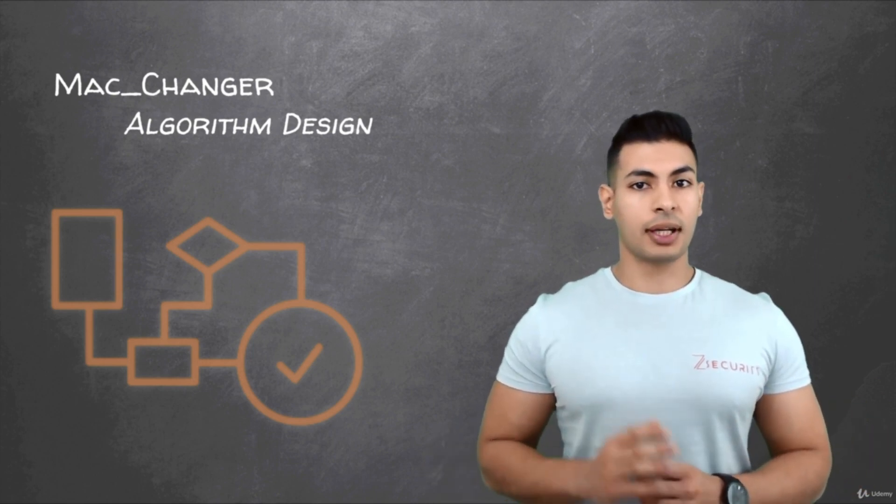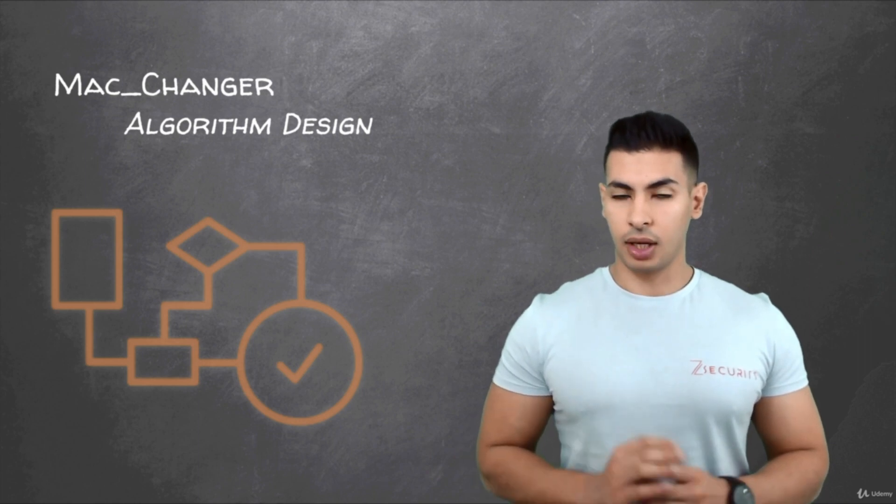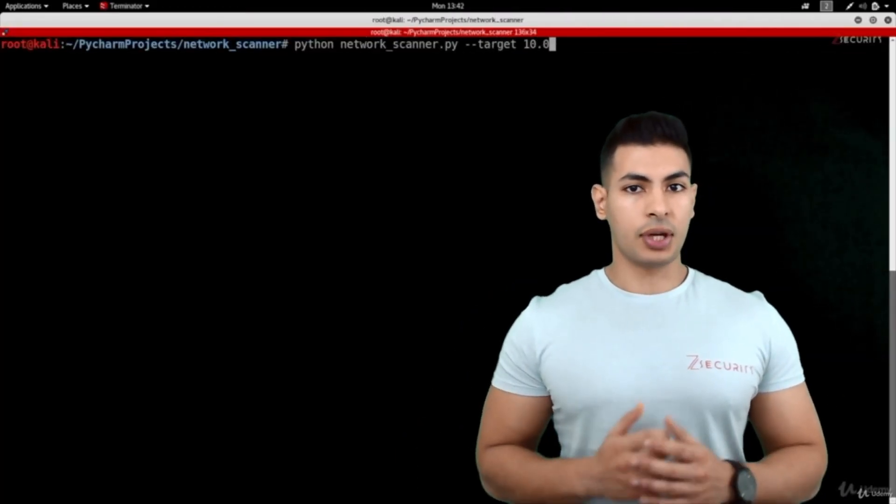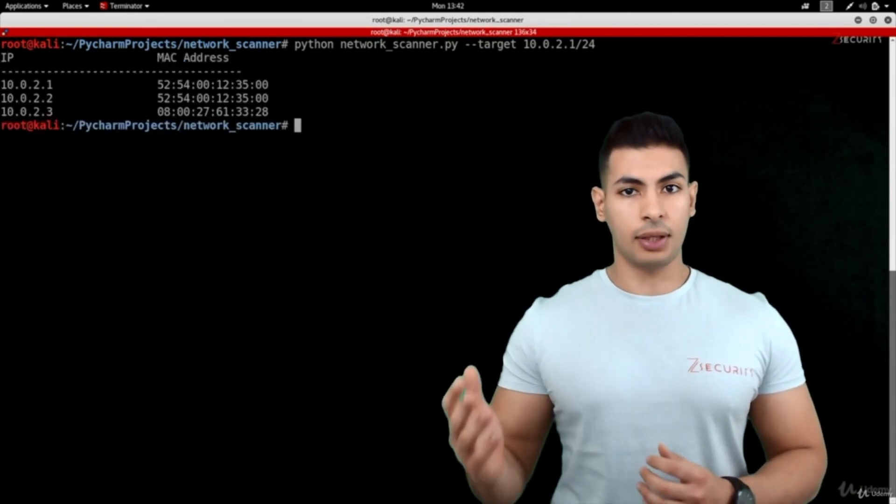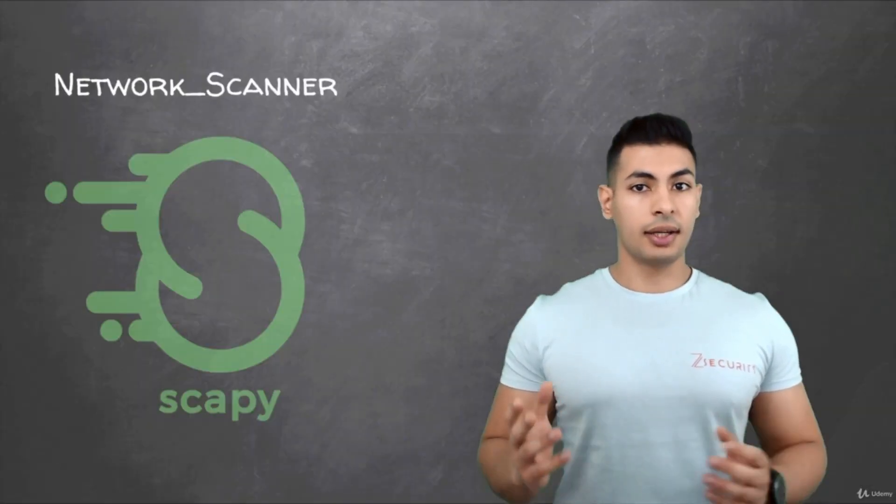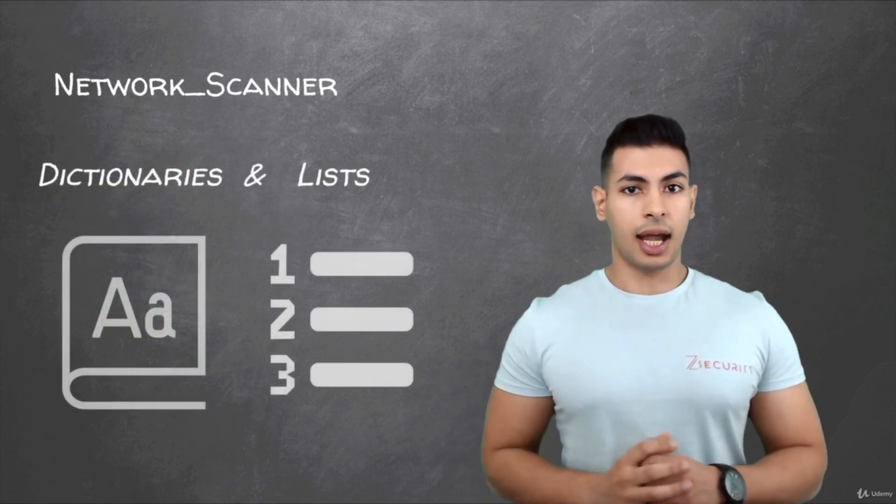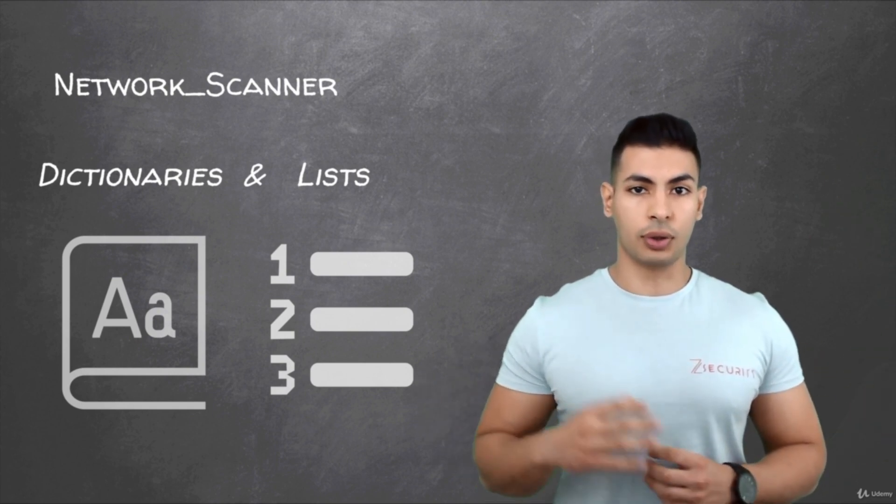Once we have the basics covered, we're going to start writing a little bit more complex programs. So we'll start with a network scanner, which is a program that can discover all clients connected to the same network and display their IP address and MAC address. In here, I'm going to introduce you to scapey, and I'm going to teach you how to send and receive ARP responses and analyze them. I will also introduce you to dictionaries and lists, and we'll see how to use them and all the operations that we can invoke on them.